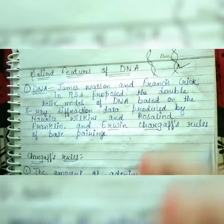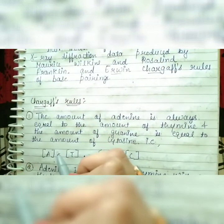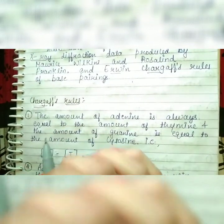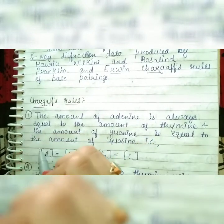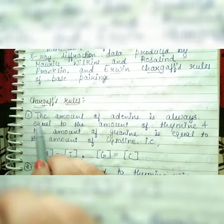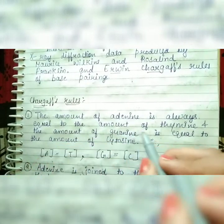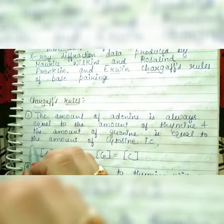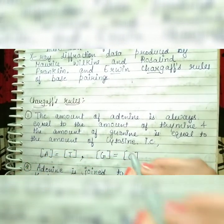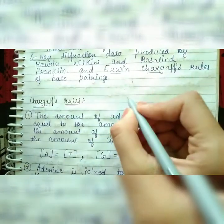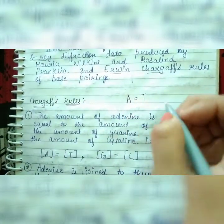Chargaff's rules state: first, the amount of adenine is always equal to the amount of thymine, and the amount of guanine is equal to the amount of cytosine. We know that A always bonds with T, and G always bonds with C.